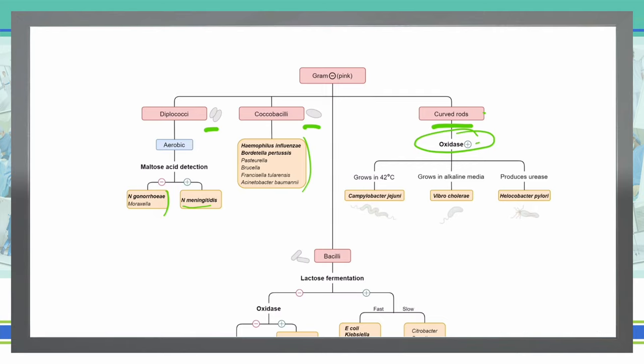If it grows under 42 degrees Celsius conditions, then we're dealing with Campylobacter jejuni. If it grows in an alkaline medium, then we're talking about Vibrio cholerae. And if it produces urease, this is Helicobacter pylori.